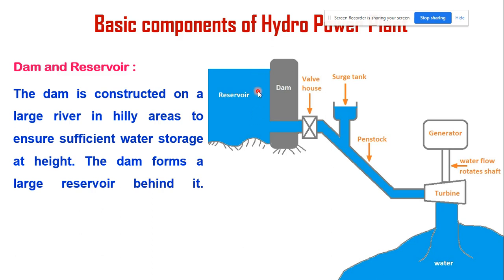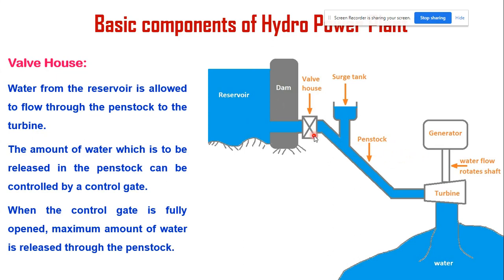The next component is the valve house, also called the control gate in some literature. Water from the reservoir is allowed to flow through the penstock. The amount of water released into the penstock can be controlled by the control gate or valve house. When the control gate is fully opened, a maximum amount of water is released through the penstock. If it is opened partially, only a limited amount of water passes through.